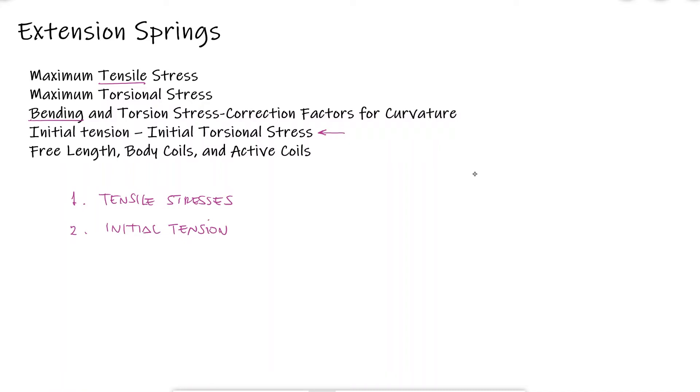The stresses within the body section of the extension spring are the same as the ones we already studied for compression springs in the last few videos, which are purely shearing stresses. However, the hook ends are subjected to tensile stresses and the maximum tensile stress you'll find will be caused by both bending and axial loading.